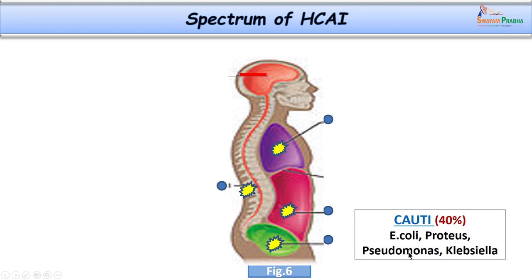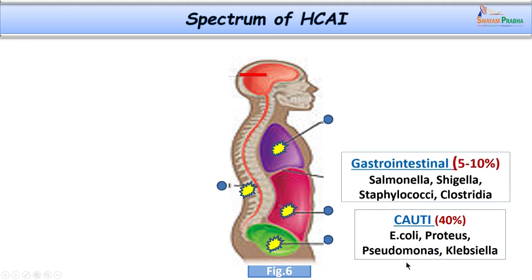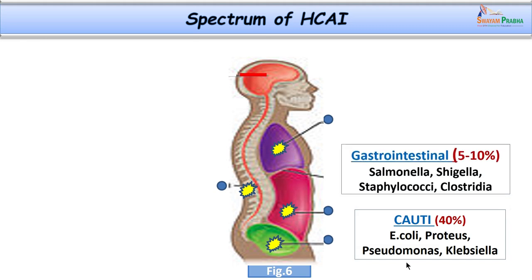Causative organisms for CAUTI include Escherichia coli, Proteus, Pseudomonas, and Klebsiella. The next group is gastrointestinal infections, which may account for up to 5 to 10 percent, caused by Salmonella, Shigella, Staphylococci, and Clostridium difficile.